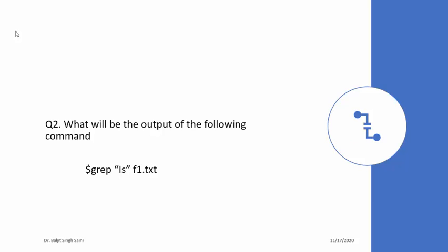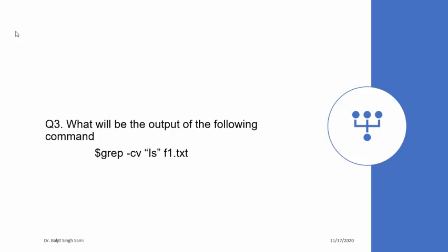Question two: what will be the output of grep with capital 'I' followed by small 's'? Question three: grep -cv with capital 'I' followed by small 's'. This time we use two options — -c to count the occurrences and -v for those lines which do not contain capital 'I' followed by small 's'.